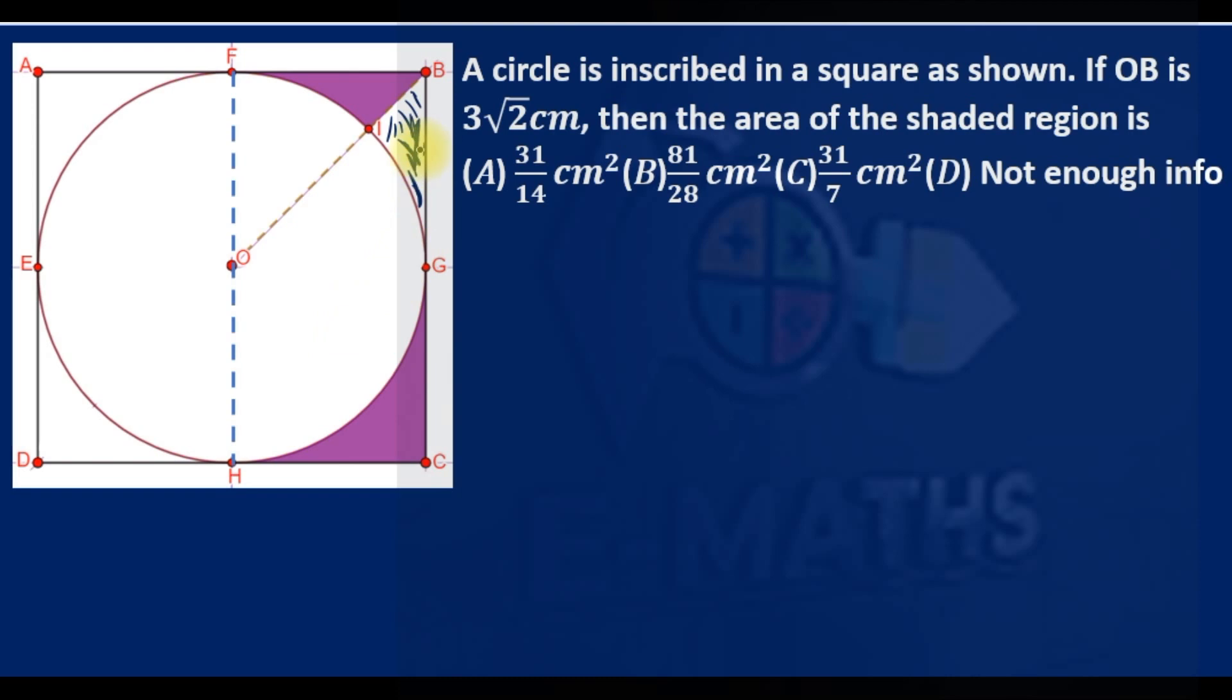But we are given just this and this. Since the center of the circle is here and this is the vertex of the square, you see that this line OB is an angle bisector.